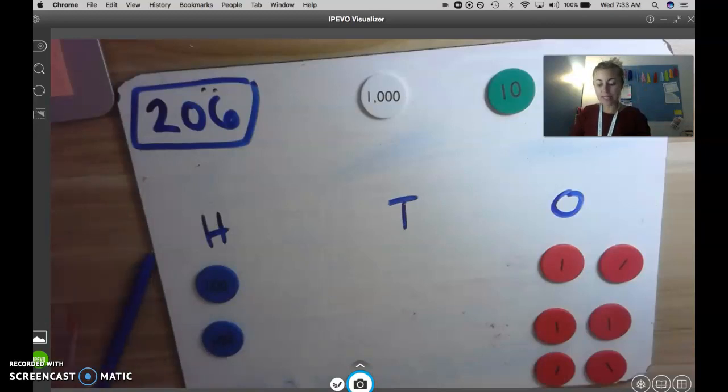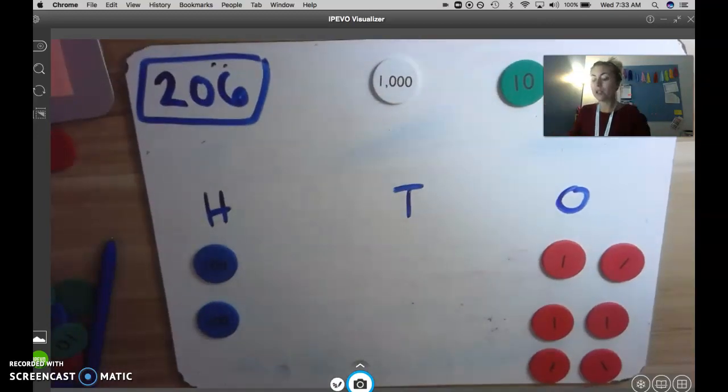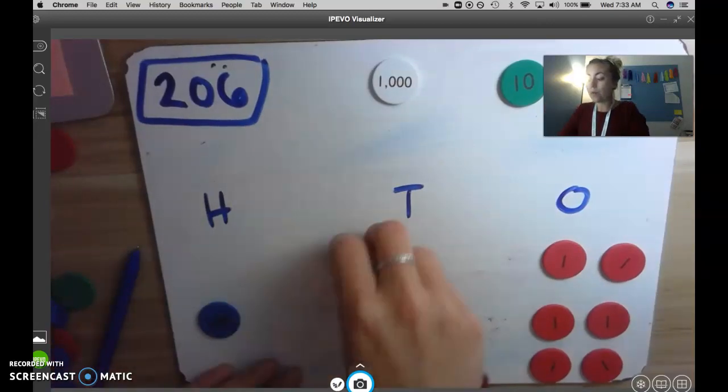So I'm going to get out as many tens as I can. I know that 100 is the same as 10 tens. So it's really easy for me to switch out 100 for 10 tens. Count with me.